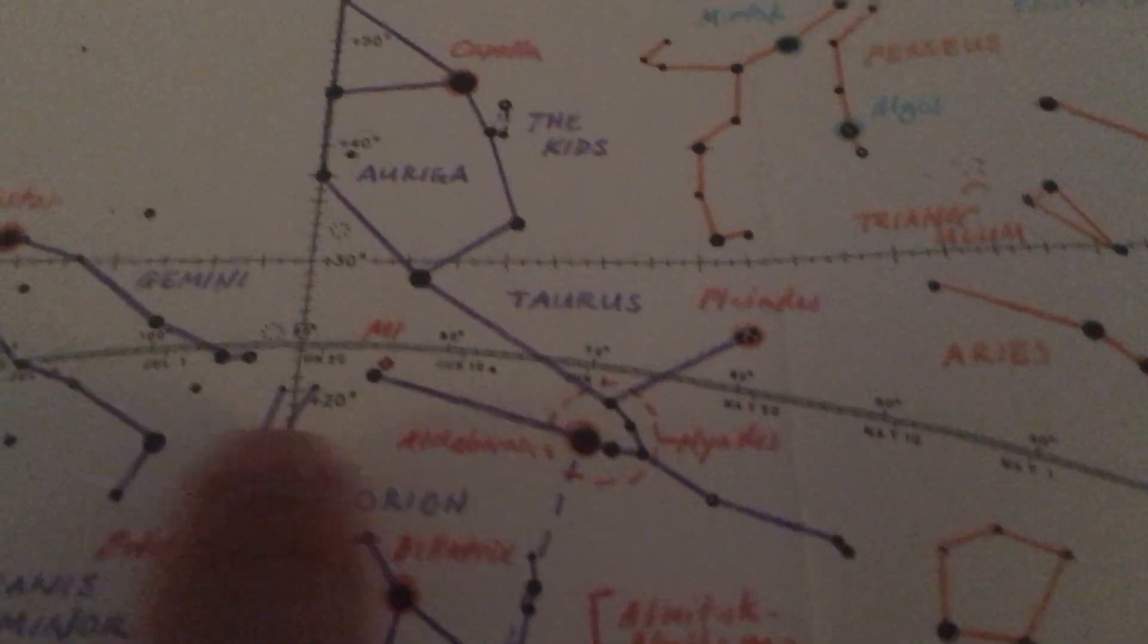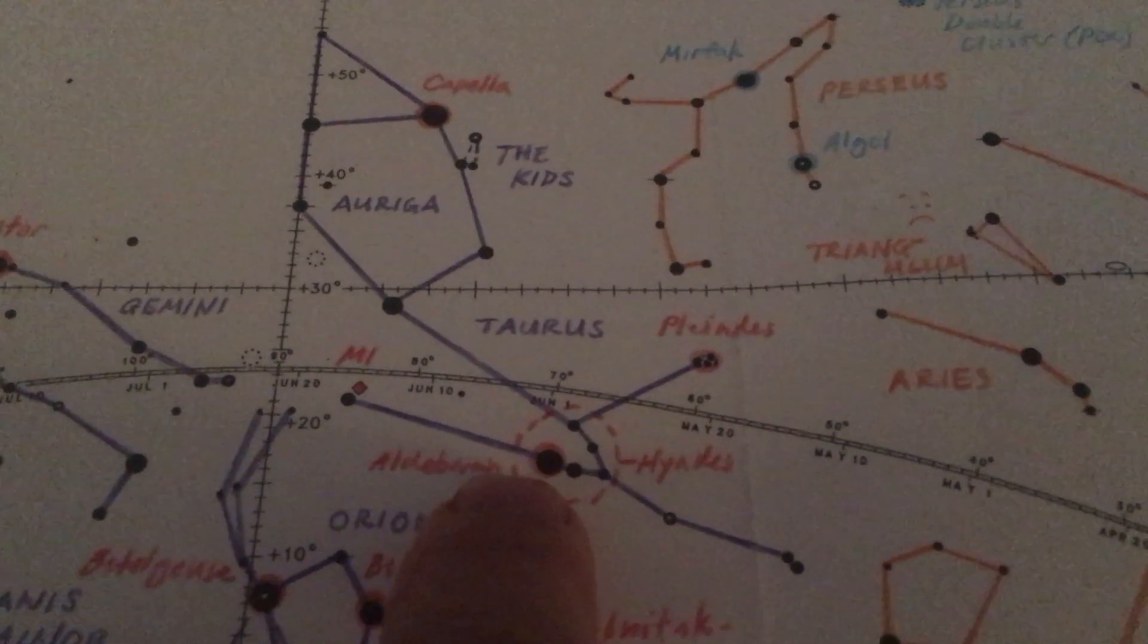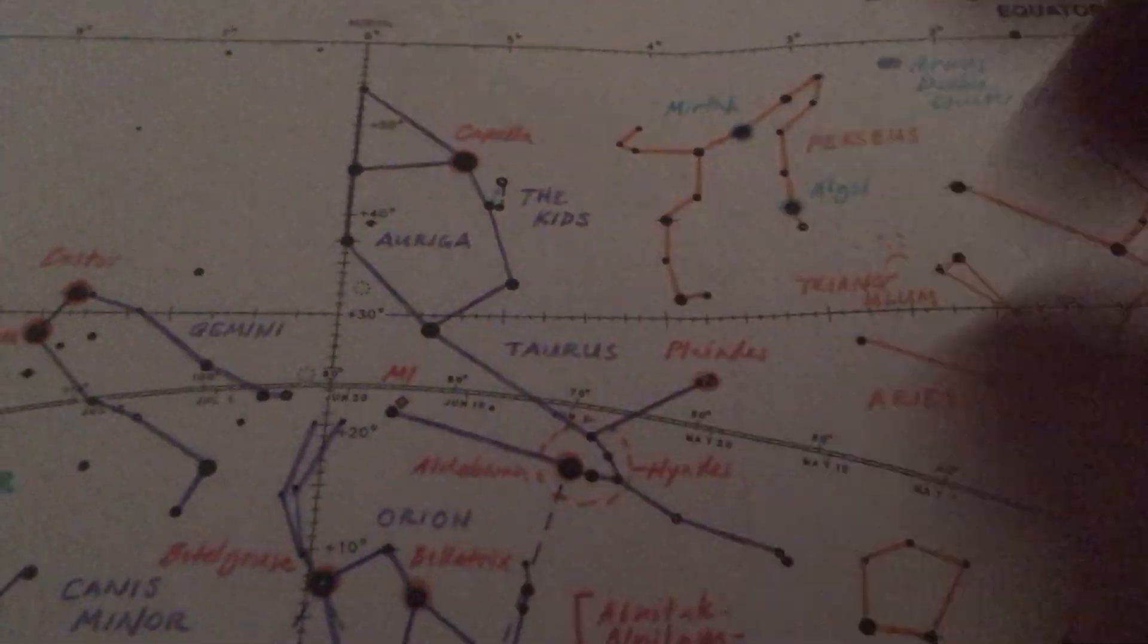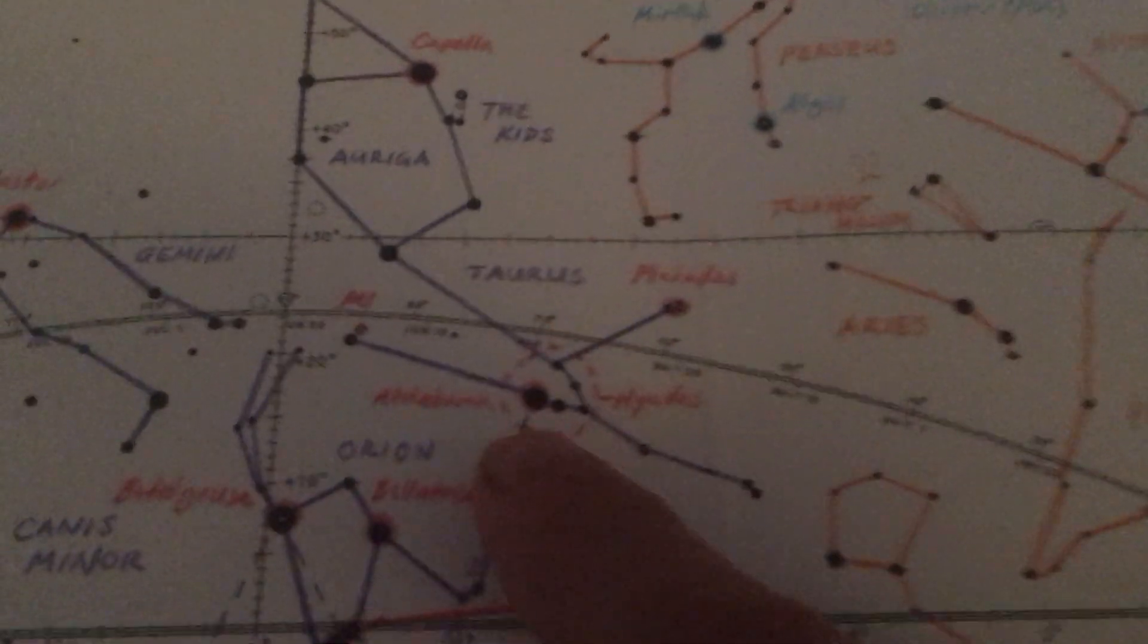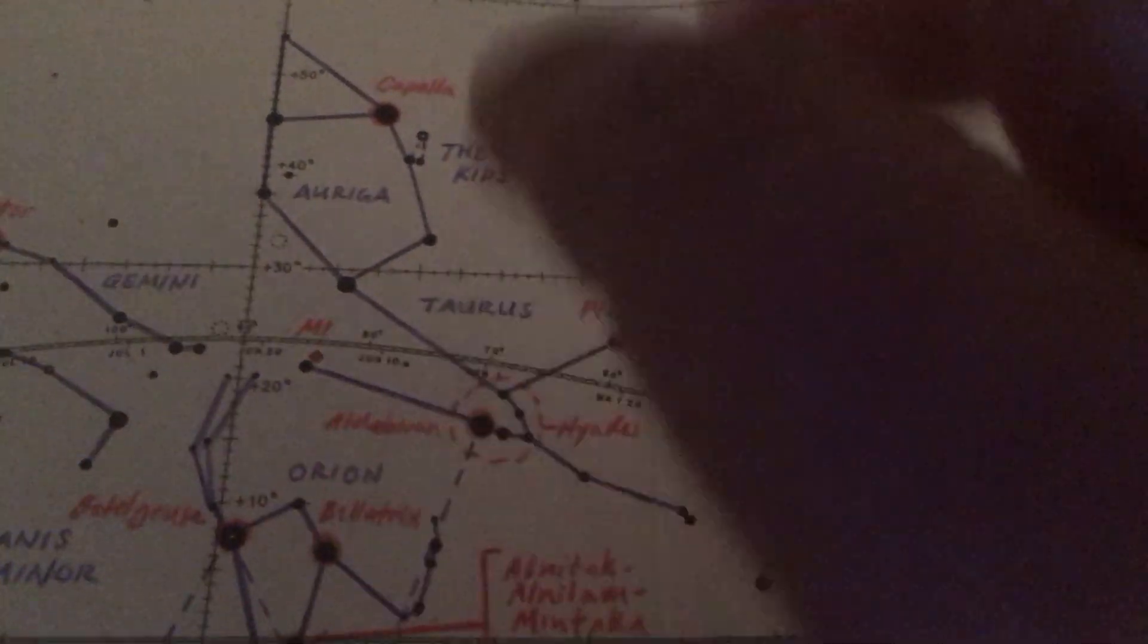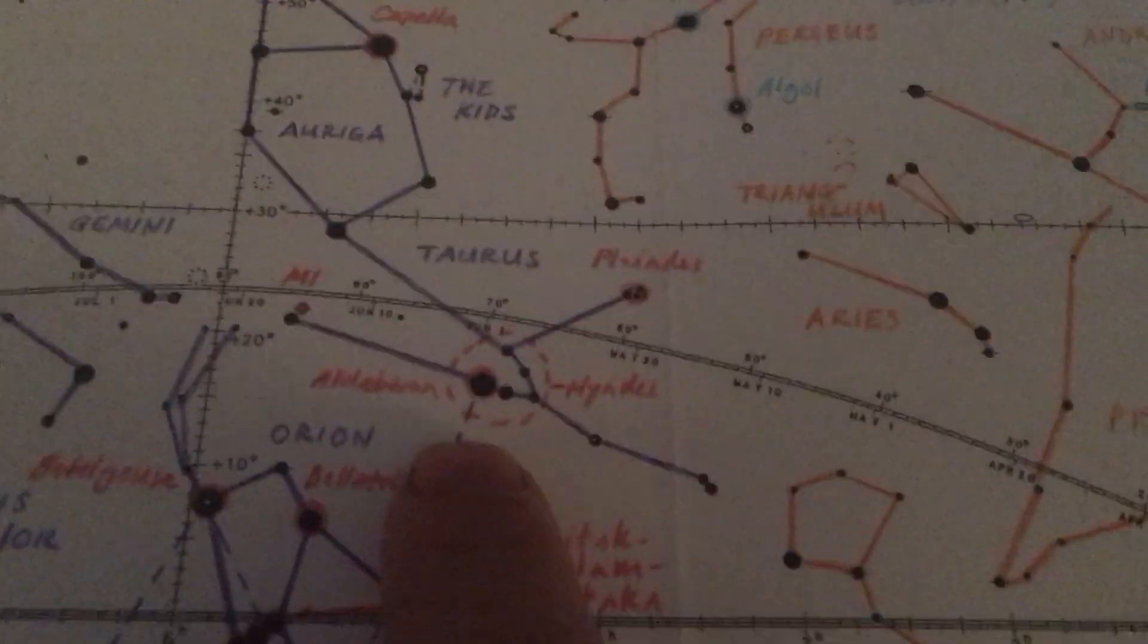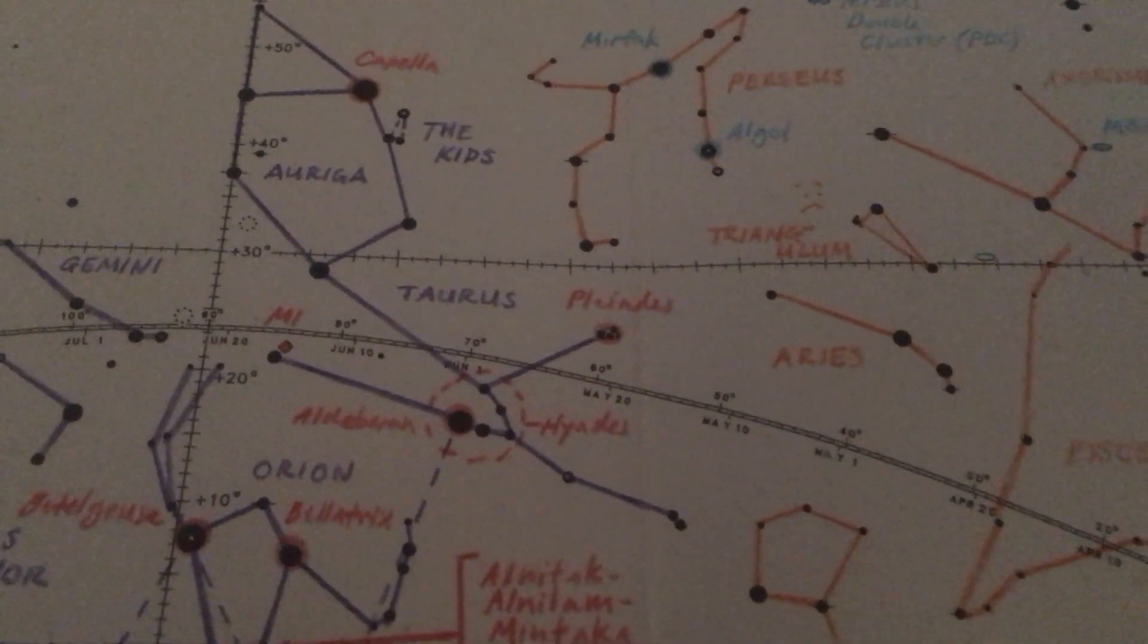Now, somewhat confusing, Aldebaran appears to be in the Hyades. It's this bright red giant star here. Technically, though, Aldebaran is actually much closer to us in outer space than the rest of the Hyades. But because our brains love to make shapes and patterns on the sky due to a phenomenon called pareidolia, we tend to consider it part of this V-shaped group, even though it's a lot closer.